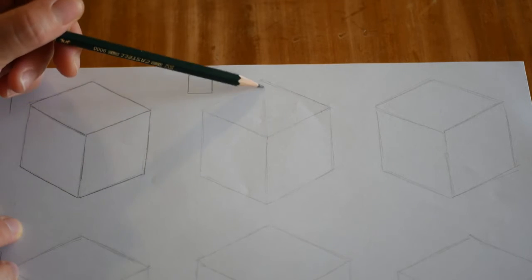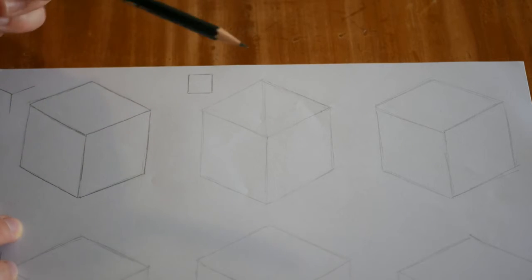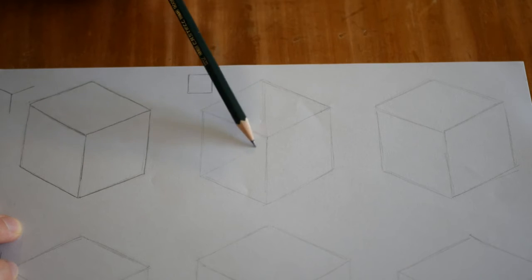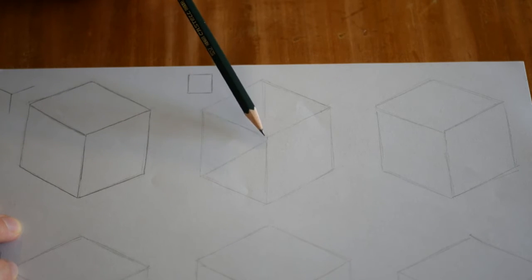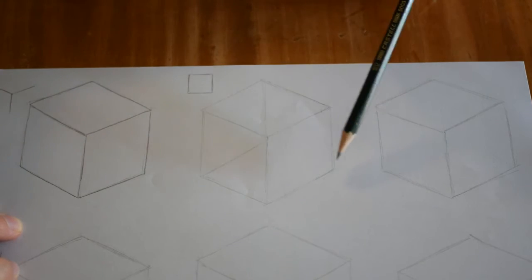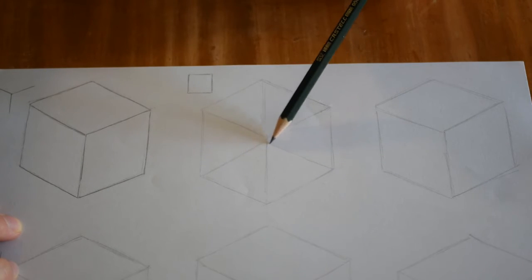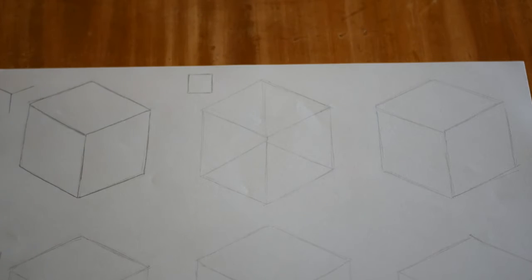We're going to bring a two o'clock line up here, and if you've drawn this really accurately they should meet in the middle. Mine's a little bit out but that's okay. Then a ten o'clock line here, and now we have a see-through cube.